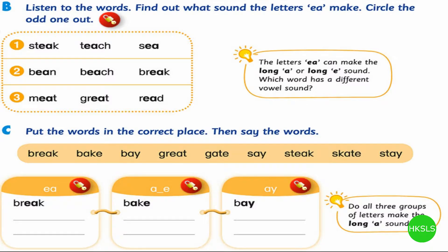B. Listen to the words. Find out what sound the letters EA make. Circle the odd one out. 1. Steak, Teach, See. 2. Bean, Beach, Break. 3. Meet, Great, Read.